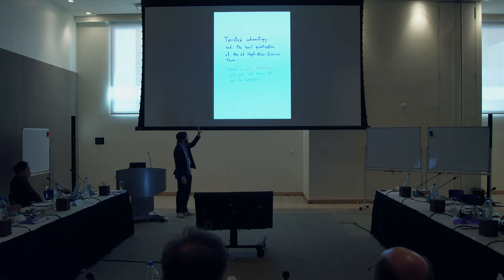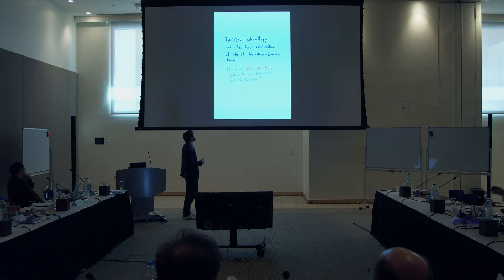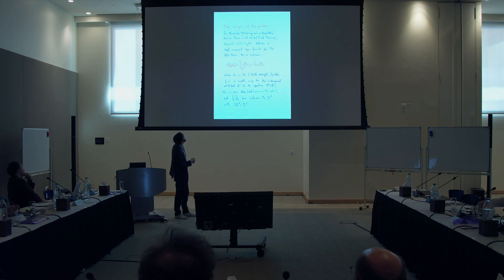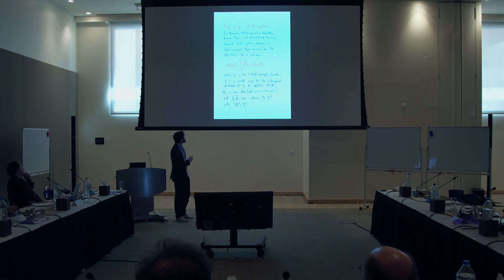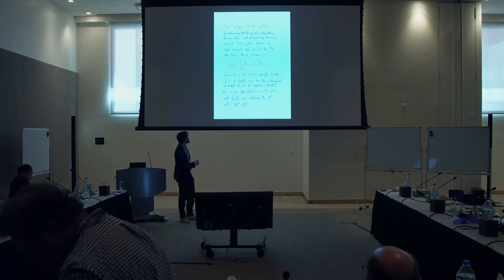The example will be the Wess-Zumino term for the five-brane. It was originally introduced by Kevin Intriligator in this paper from around the year 2000. What Kevin Intriligator does is introduce an action for the five-brane which is strongly reminiscent of the Witten formula for the Hopf invariant.